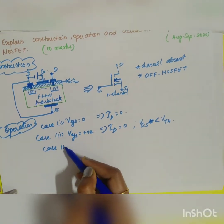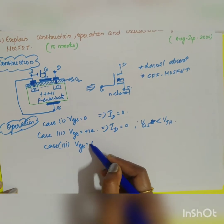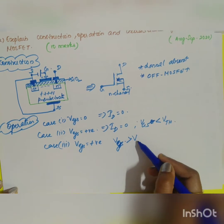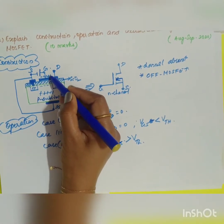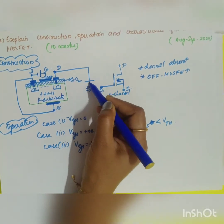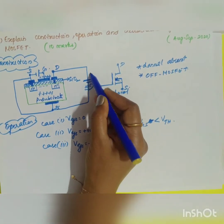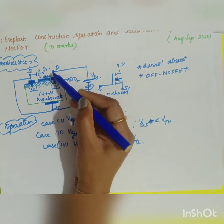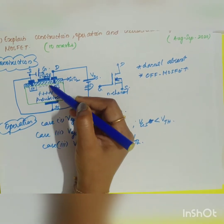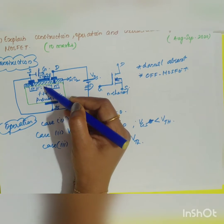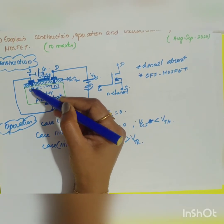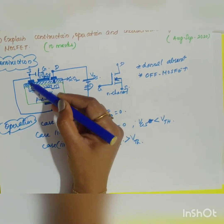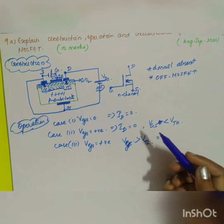Case 3: when VGS is positive and greater than the threshold voltage. As you keep increasing VGS and also apply a positive VDS, the positive charge carriers increase at the gate, causing accumulation of negative charge carriers. This forms a virtual channel between the two n-type semiconductors, allowing drain current ID to start flowing.